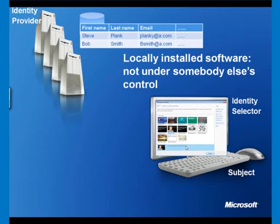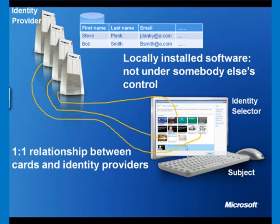So we need to have an identity system which caters for the fact that there will always be multiple identity providers on the internet. There's a one-to-one relationship between identity providers and the cards they issue — each identity provider can issue many millions of cards, but each card can only come from a single identity provider.